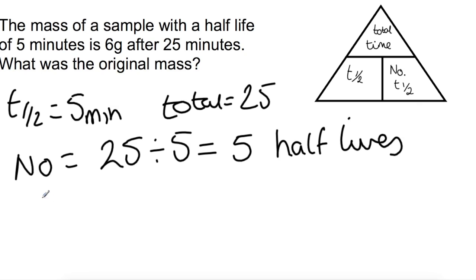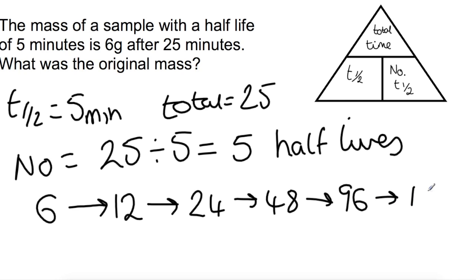If we have, after 25 minutes, we have 6 grams. So this time, we're going to double up until we get back to the original. So we're looking to put in 5 arrows. So the original mass must have been 192 grams. You can see we've got 5 half-lives here, leading us back to the original mass.